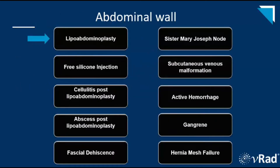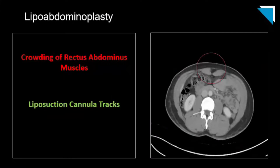The first case is the typical postoperative appearance of a lipoabdominoplasty — the common combination of a tummy tuck with liposuction. The abdominoplasty portion involves a large hip-to-hip incision, release of the umbilicus, midline muscle plication, resection of redundant skin, and skin closure.